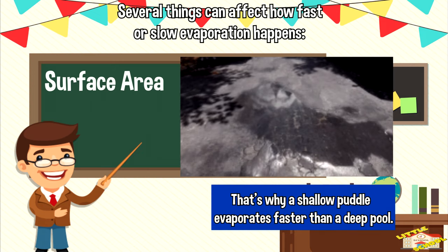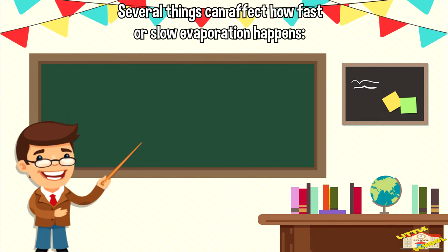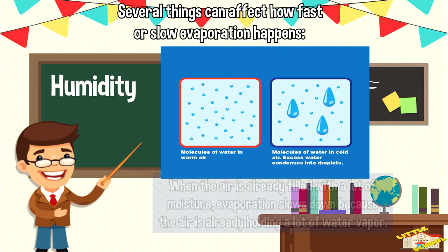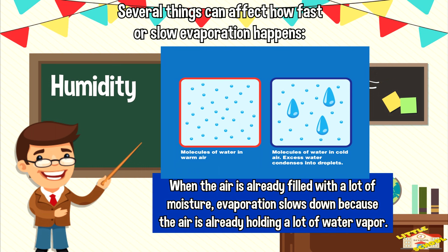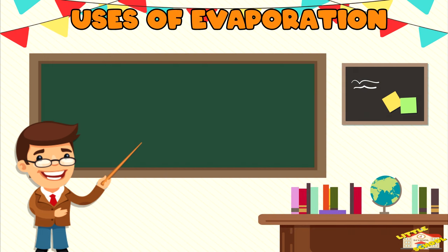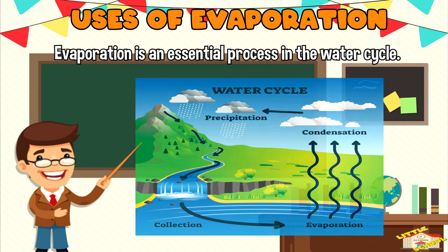Humidity is the amount of moisture or water vapor in the air. When the air is already filled with a lot of moisture, evaporation slows down because the air is already holding a lot of water vapor.